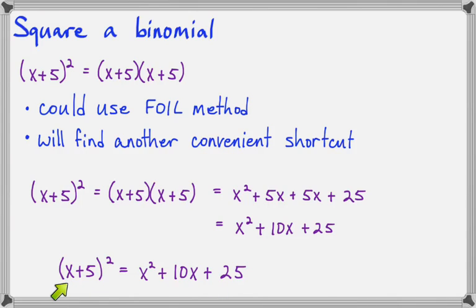I want you to notice that we can get the first term by doing x times itself. We can get the last term by doing 5 times itself. But the middle term we get by doing 5 times x times 2. So 5x times 2 is 10. Now why is it times 2? Well, because when we did the FOIL method, the outer times outer and the inner times inner gave us two identical terms. So if we just take one of those, 5 times x, and double it to get 10x, we have our middle term.